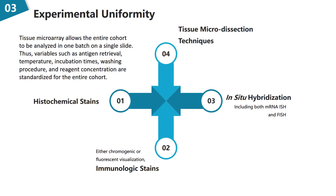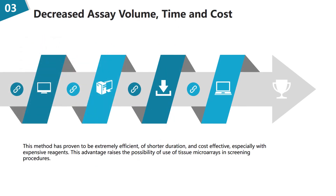With this technology, each tissue sample is treated in an identical manner, and microarrays are amenable to a wide range of techniques, including histochemical stains, immunologic stains with either chromogenic or fluorescent visualization, in situ hybridization including both mRNA-ISH and FISH, and even tissue microdissection techniques. As only a very small amount of reagent is required to analyze an entire cohort, fewer laboratory personnel are needed. This method has proven to be extremely efficient, of shorter duration, and cost-effective, especially with expensive reagents, raising the possibility of using tissue microarrays in screening procedures.